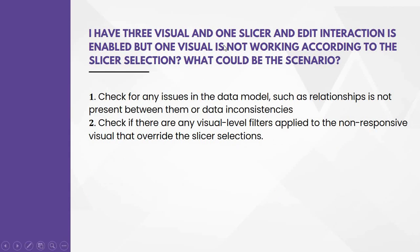The next question: I have three visuals and one slicer, and edit interaction is enabled, but one visual is not working according to the slicer selection — what could be the scenario? We can check for any issue in the data model, such as a relationship not being present between them or data inconsistencies. Another option is to check if there are any visual-level filters applied to the non-responsive visual that override the slicer selection.